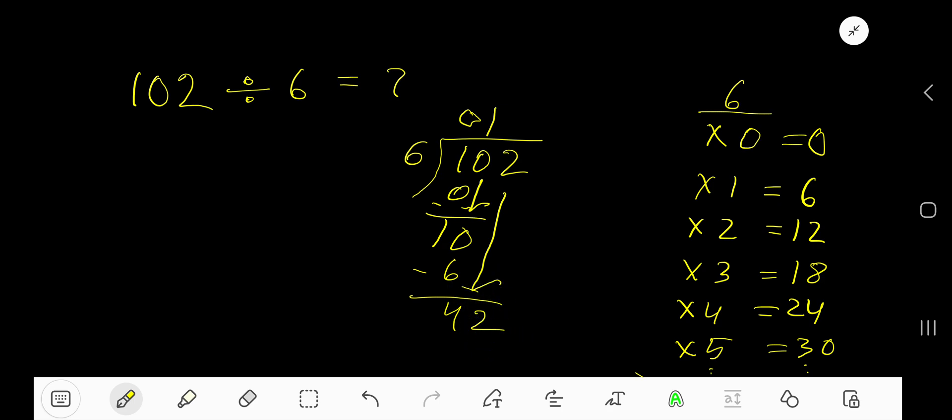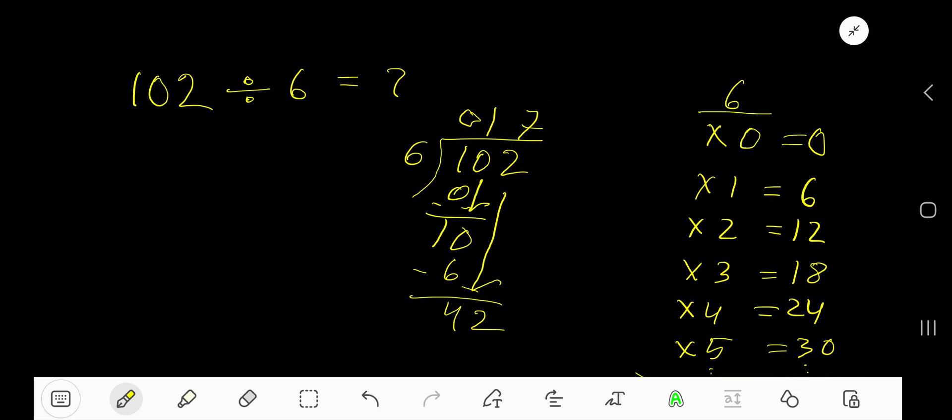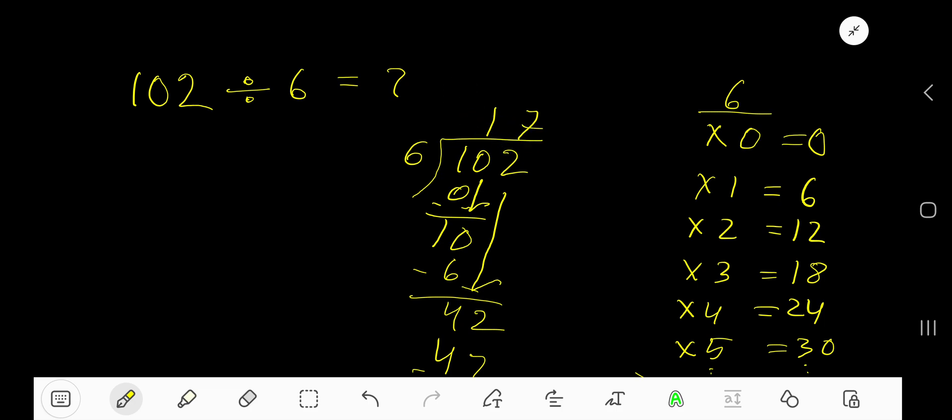42. 6 goes into 42 how many times? 7 times. 7 times 6 is 42. Subtract, you get 0. So our answer is 017, which means 17.